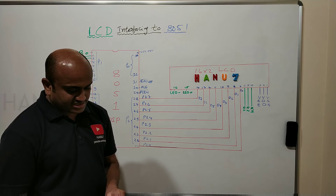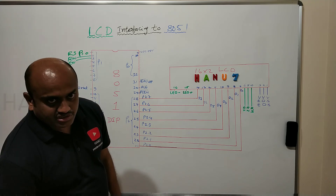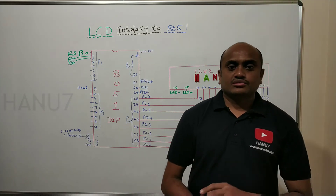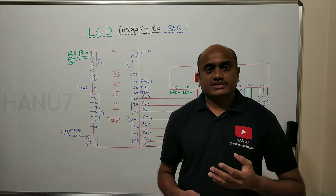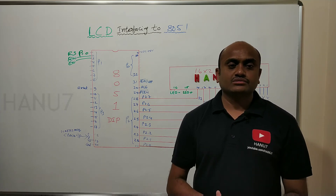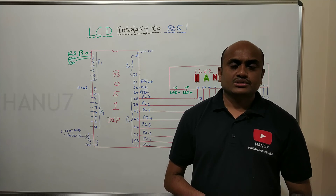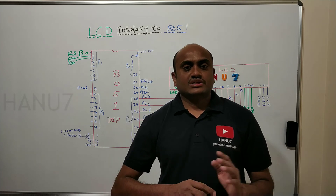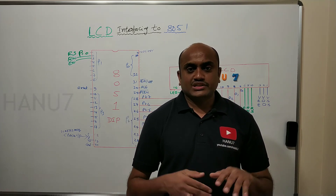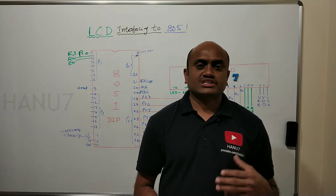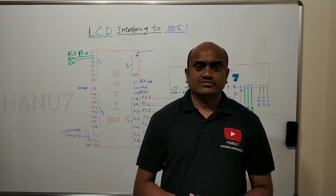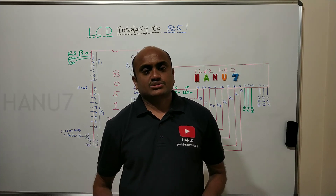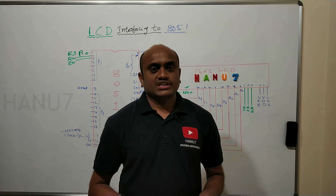As I mentioned, the interfacing is very simple — we just need to connect the respective pins of the LCD to the respective pins of the microcontroller. However, it is not that easy to get data displayed on the LCD; you also need to learn how to program the microcontroller to display data on the LCD. We will cover that in the same video or the next video depending on duration. That's all about interfacing the LCD to the 8051 microcontroller. Thank you.